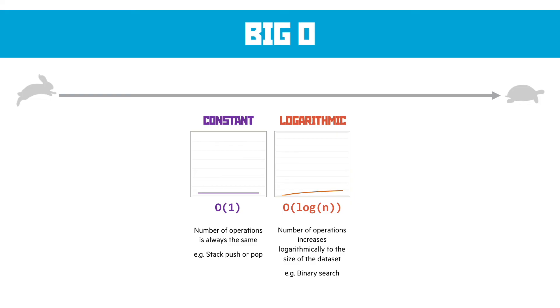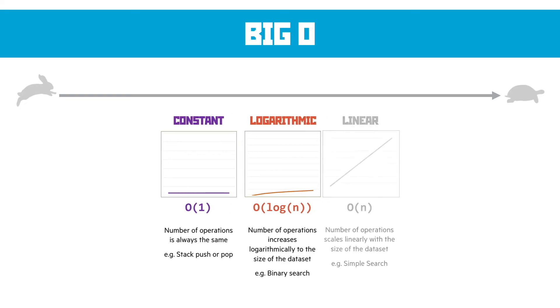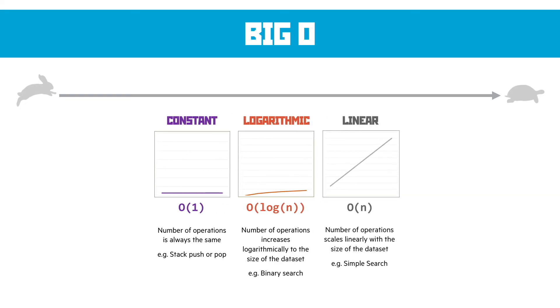In third place is linear, and this is where the number of operations scales linearly. Now this is where N is the predominant factor. So if it was 5N or 57 or 4 million N, it doesn't matter. N is the predominant factor that makes a big difference to the size of the data set and the complexity of how it's going to work it out. And a good example of this is simple search. If the data set of simple search is 5, we may have to look at 5 things. If it's 5 billion, we may have to look at 5 billion things to find the item.